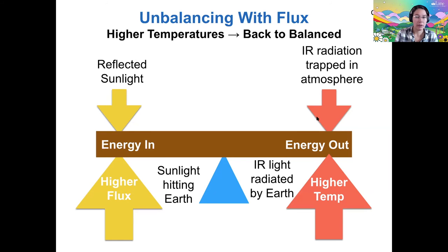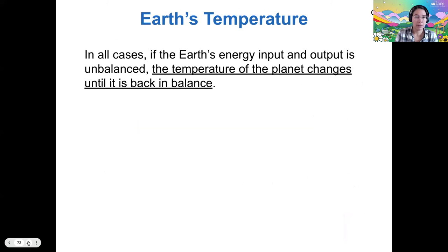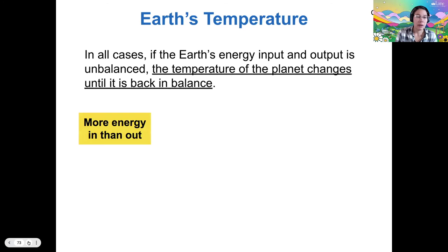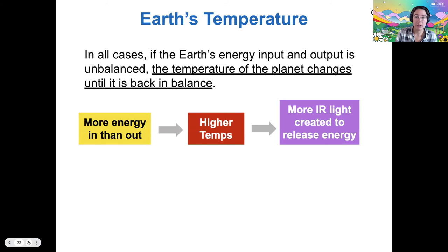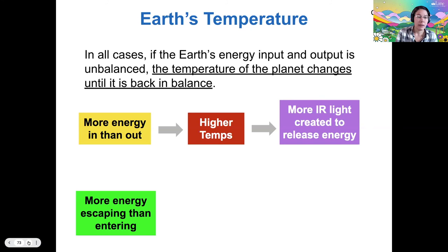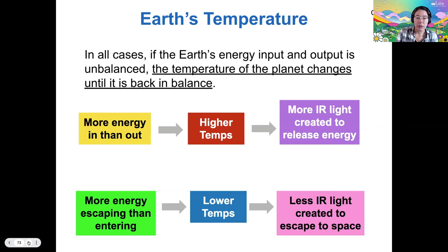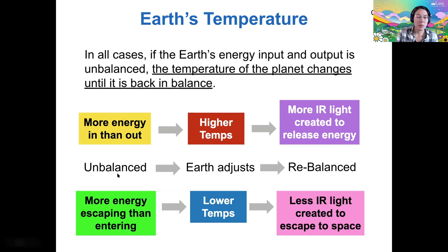We've talked about all three of these levers. Notice that in all cases, if the Earth's energy input and output is unbalanced, the temperature is what changes until we drive the situation back to balance. If we have more energy in than out, we get higher temperatures, which creates more infrared light radiated to decrease the energy. If there's more energy escaping than entering, then we reach lower temps and have less IR light radiated to space. That is essentially the system at work — anytime you're unbalanced, regardless of which direction it goes, the temperature of Earth adjusts until we're rebalanced.